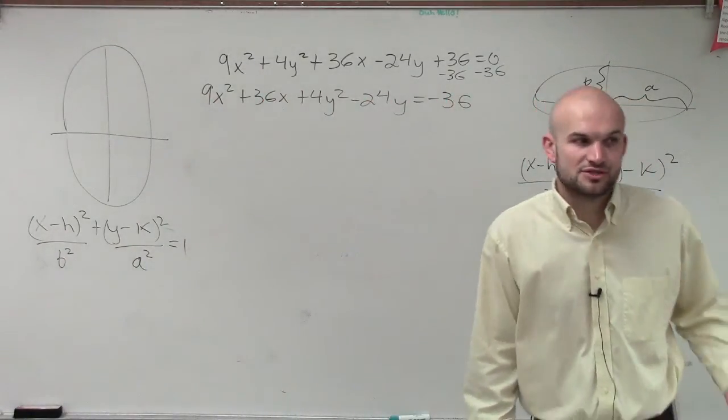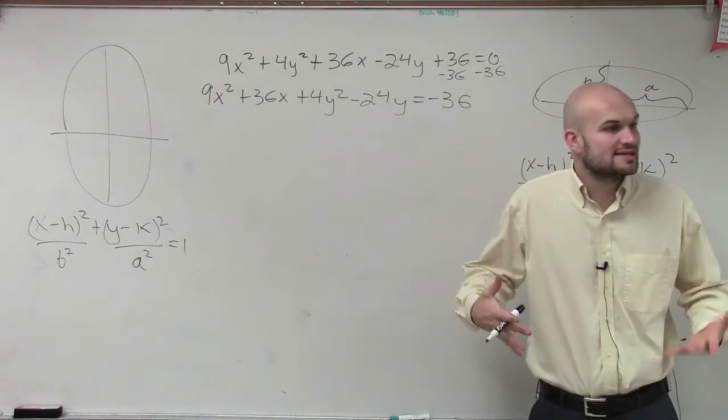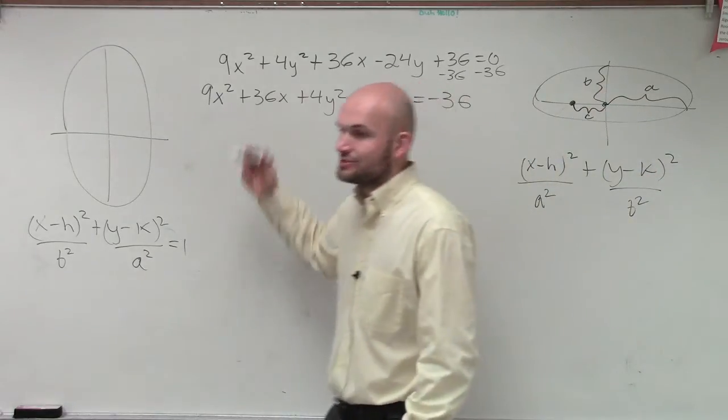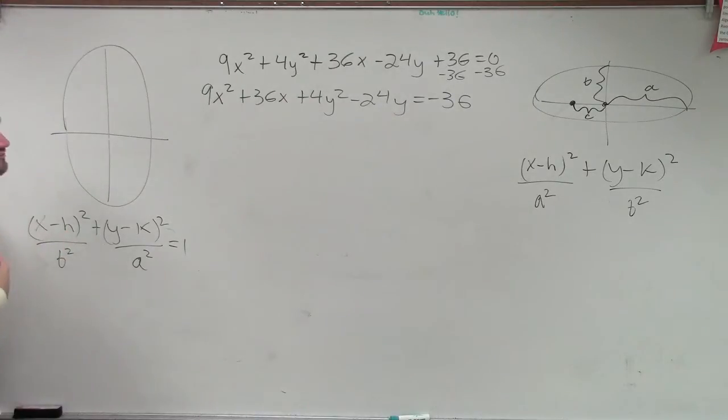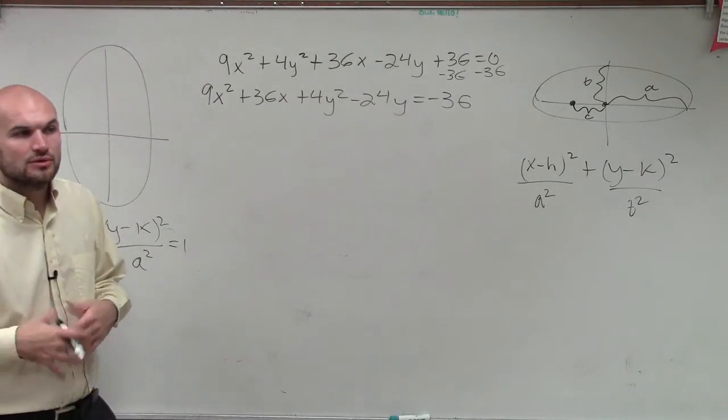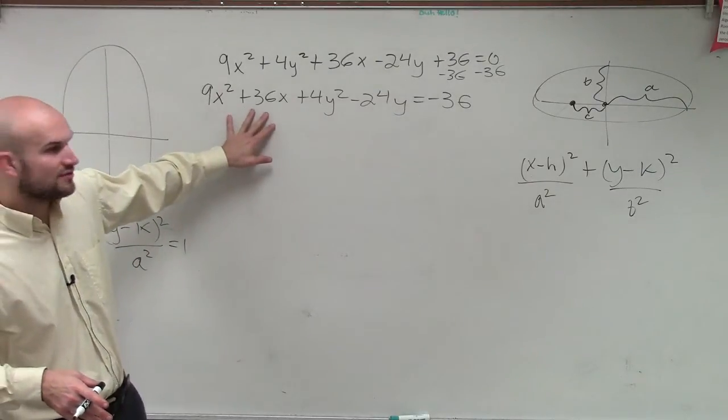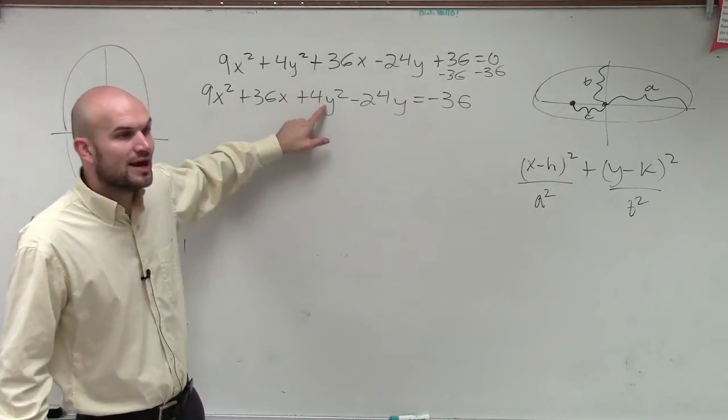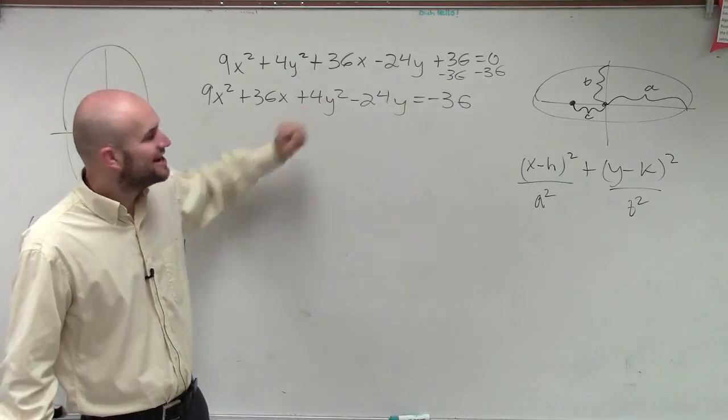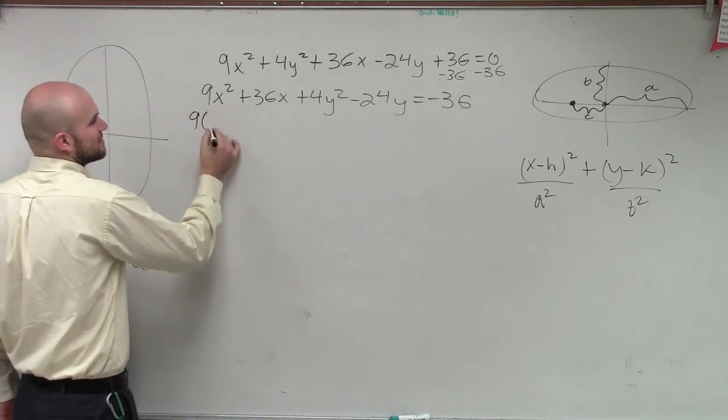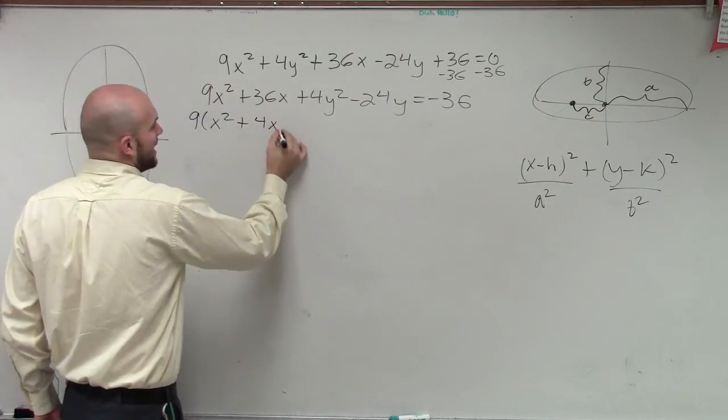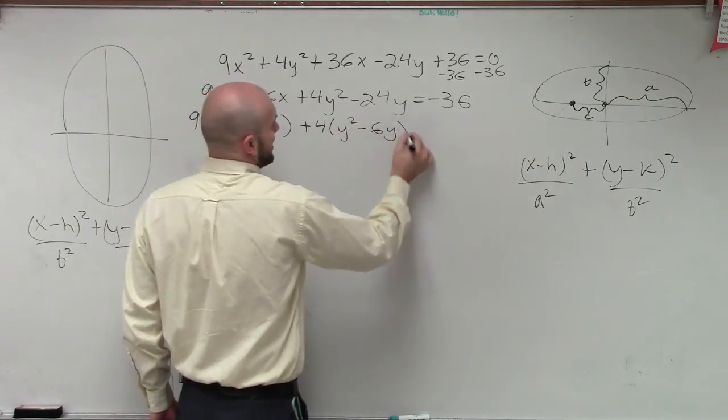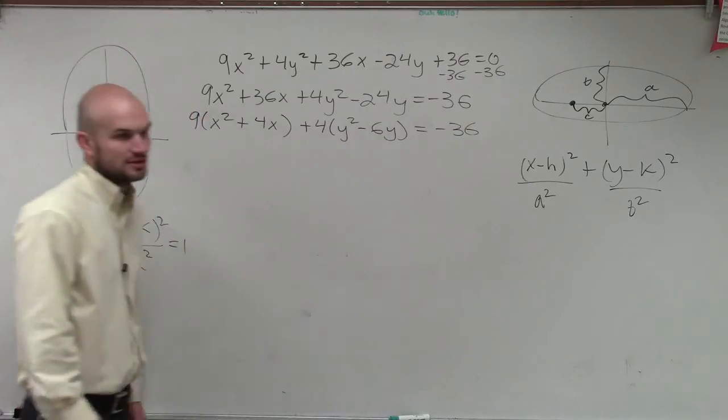What we notice about our form is to find the center, it's in binomial squared form. So what I need to do to rewrite this is complete the square for the x's and complete the square for the y's. But when completing the square, we cannot complete the square when we have a coefficient in front of our quadratic term. So the first thing I'm going to do is factor out a 9, so I'm left with x² + 4x, factor out a 4, 4 times y² - 6y = -36.